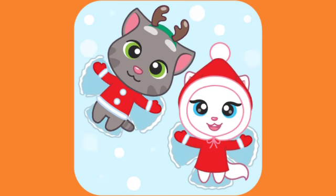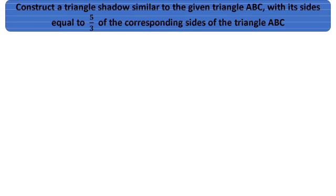Dear children, let's learn about construction in chapter similar triangles, class 10th. Construct a triangle shadow similar to the given triangle ABC with its sides equal to 5 by 3 of the corresponding sides of the triangle ABC.